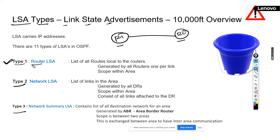Type 1 LSA is termed as Router LSA. Imagine that I have enabled OSPF in R1 and R2. Router LSA is generated by each router, one per link. This will carry this interface IP here. This link also will be going inside here — Type 1 Router LSA.